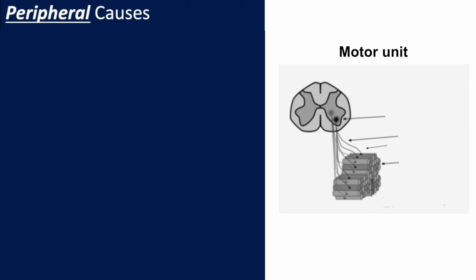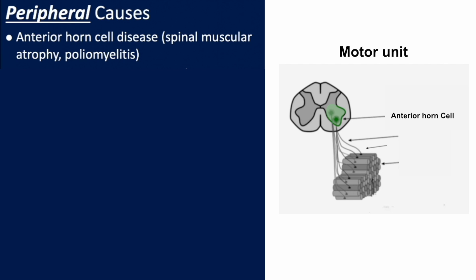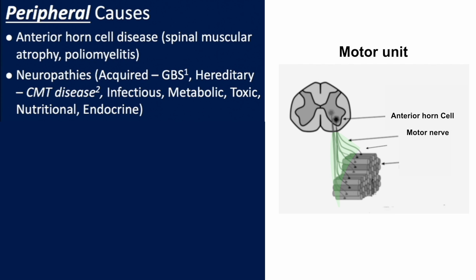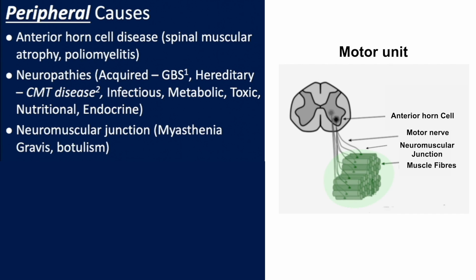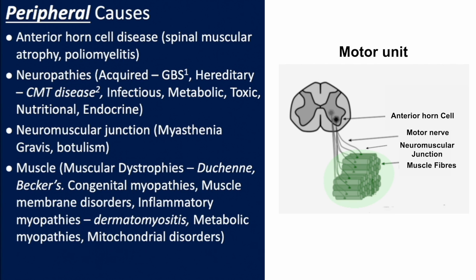When thinking about peripheral causes, think through the anatomy of the peripheral motor unit. Start at the anterior horn cell, which can be affected in spinal muscular atrophy or poliomyelitis. The abnormality could lie in the peripheral nerve, including acquired and hereditary causes. It could also be localized to the neuromuscular junction, as in myasthenia gravis, and finally at the muscles, as in Duchenne muscular dystrophy or congenital myopathies.